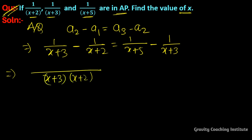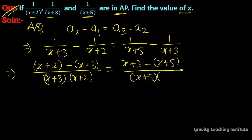So this will be x plus 2 minus x plus 3 upon x plus 3 times x plus 2 equals x plus 3 minus x plus 5 upon x plus 5 times x plus 3. Now we will open the brackets and then the signs will change.